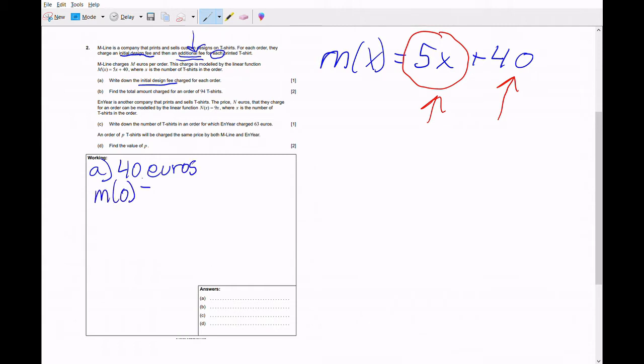If you want to show your work or you're not convinced yet, you can actually plug in zero for x because in this scenario we're saying okay, for no t-shirts printed, how much is the initial design fee going to be. A similar example would be like for a taxi cab, its initial fee is going to be whatever like two dollars or something, and how much is it going to charge you per kilometer, that would be the 5x. The 40 would be the initial fee that the taxi cab charges. So putting in zero for the shirts, we're gonna have 5 times 0 plus 40. m(0) equals 40.